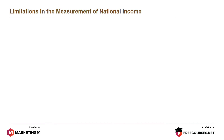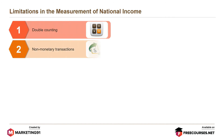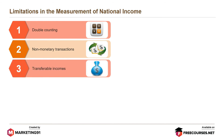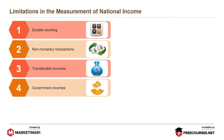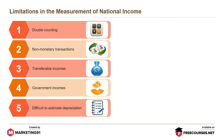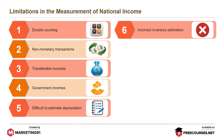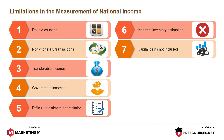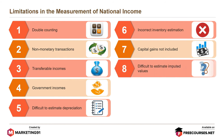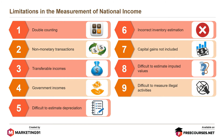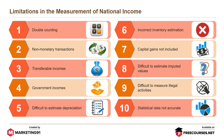Limitations in the measurement of national income include: double counting, non-monetary transactions, transferable incomes, government incomes, difficult to estimate depreciation, incorrect inventory estimation, capital gains not included, difficult to estimate imputed values, difficult to measure illegal activities, and statistical data not accurate.